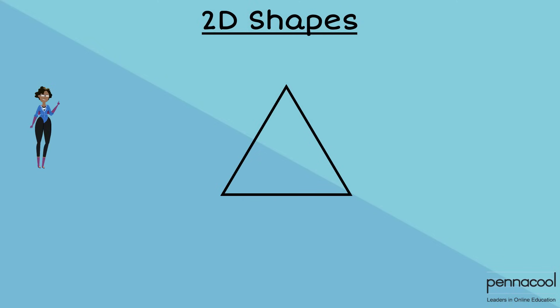2D shapes have edges and corners. Corners are formed where two edges meet.